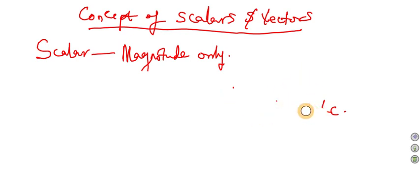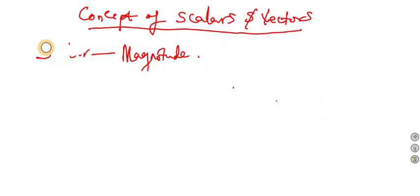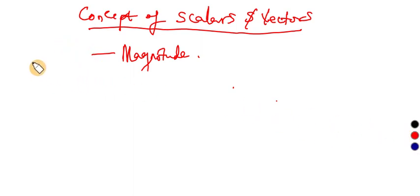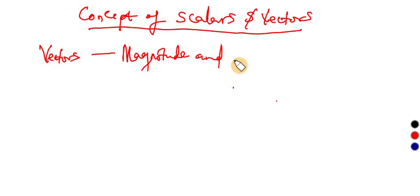A vector quantity has both magnitude and direction. Vectors have both magnitude — that is, size — and direction.